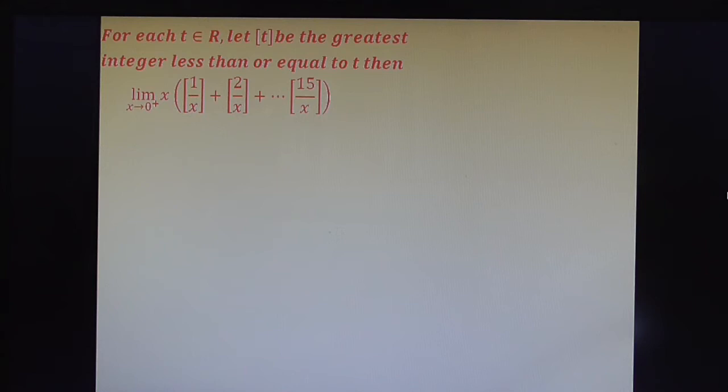For each t belongs to R, let [t] be the greatest integer less than or equal to t. So we have given that this is greatest integer, and then limit x tends to 0, x into [1/x] plus [2/x] plus up to [15/x].